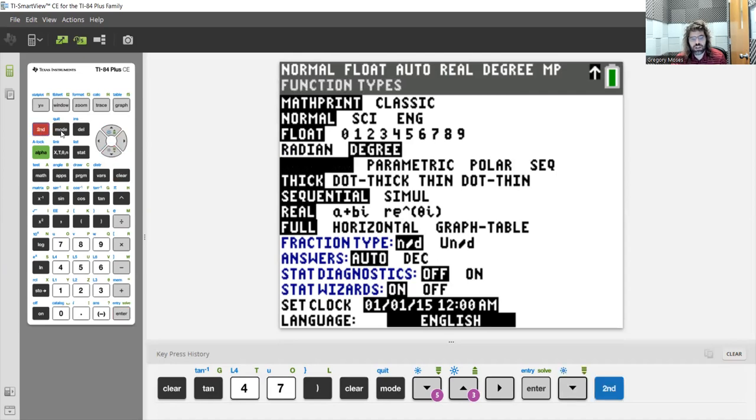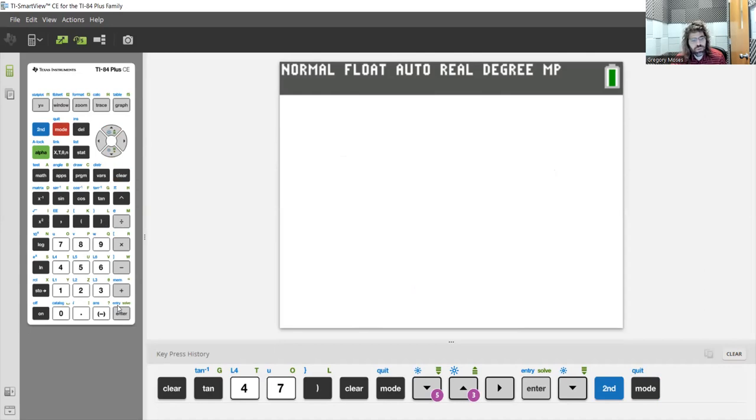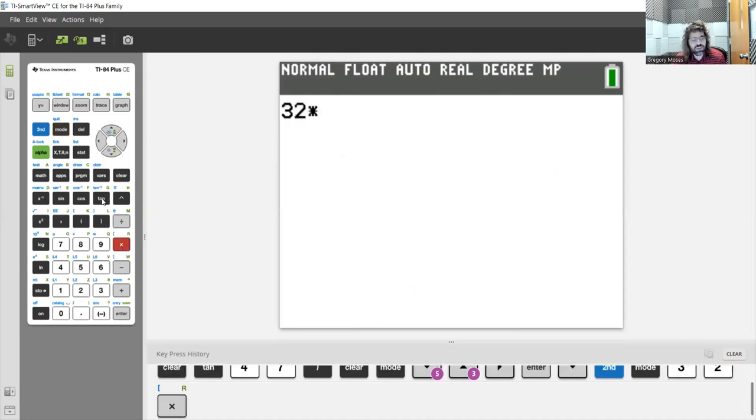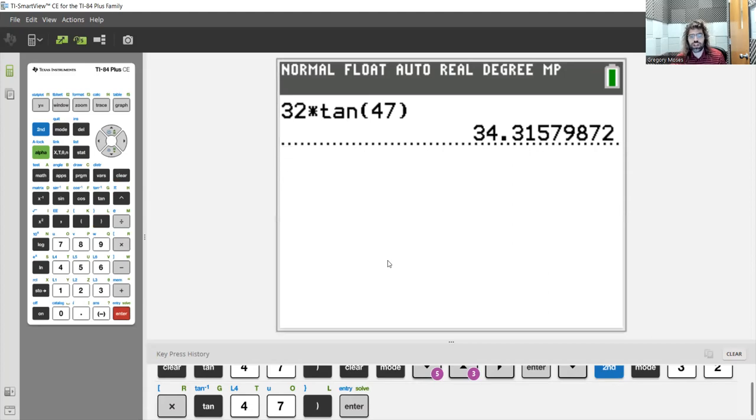and then quit out. And now when we type 32 times the tangent... sine, cosine, and tangent are up here. There is no secant, cosecant, or cotangent button. 32 times the tangent of 47. Our calculator will understand that we mean 47 degrees. Press enter.